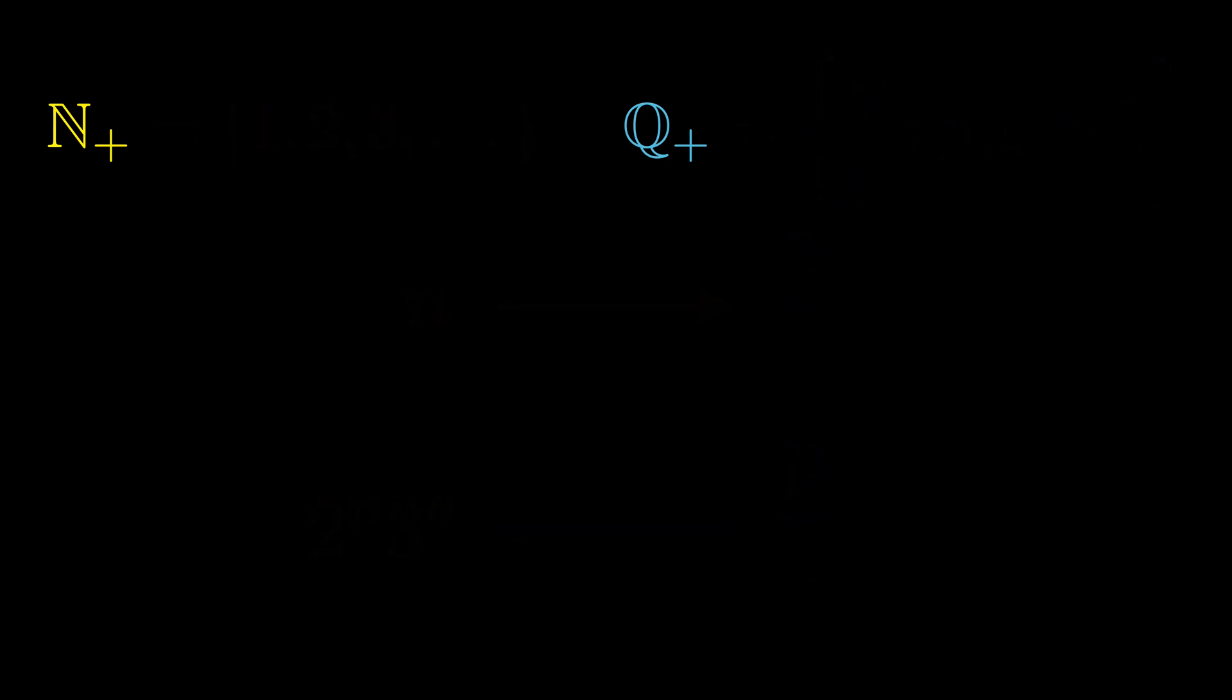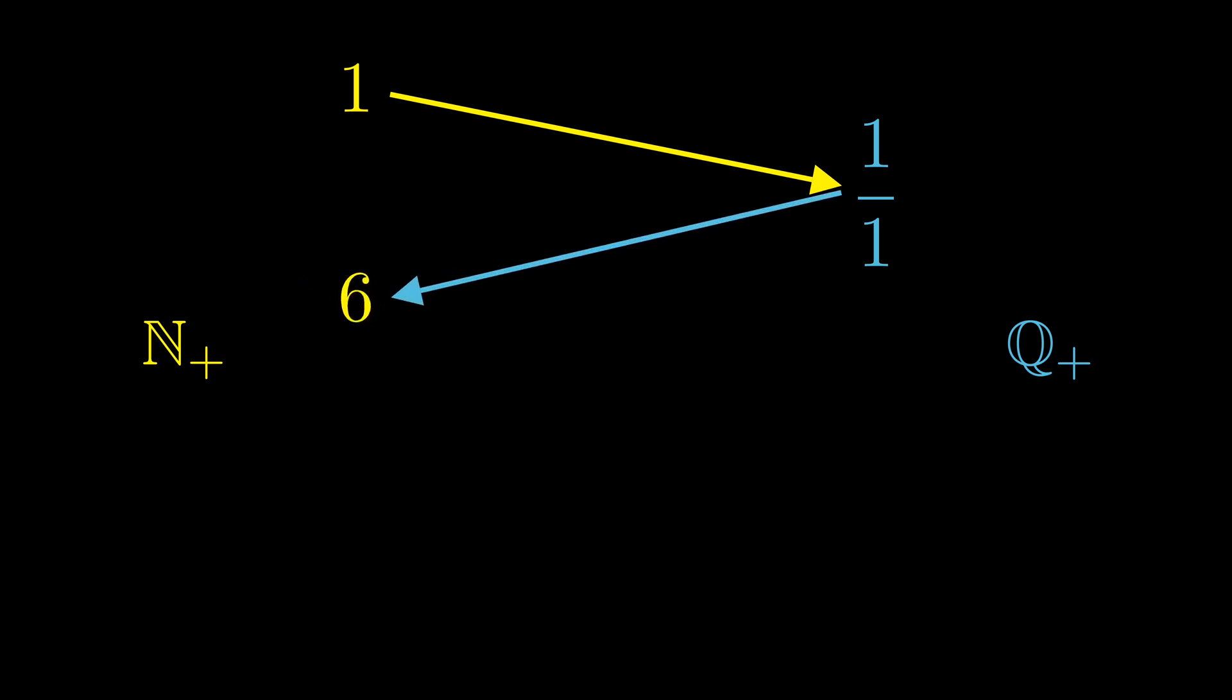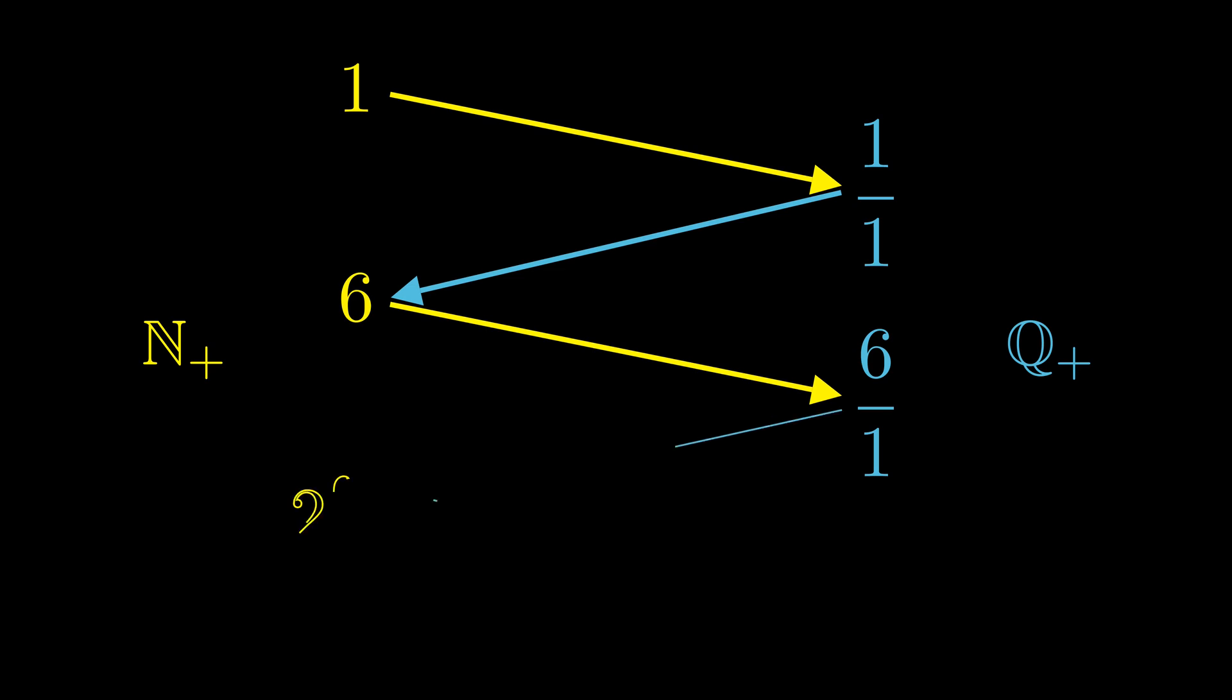If we wanted, we could look at the chains that might divide up the two sets. For example, one chain will start at 1. No fraction will map to 1, because that would be 2 to the 0 times 3 to the 0, and 0 over 0 isn't a valid fraction. But 1 will map to 1 over 1 on the right. That will map to 2 to the 1st times 3 to the 1st, which is 6, on the left. 6 matches to 6 over 1 on the right, and that will go to 2 to the 6th times 3 on the left. This is a chain that will keep going down, growing infinitely large. Since it starts on the left, when we make our bijection, we'll use the yellow arrows to match up its elements.